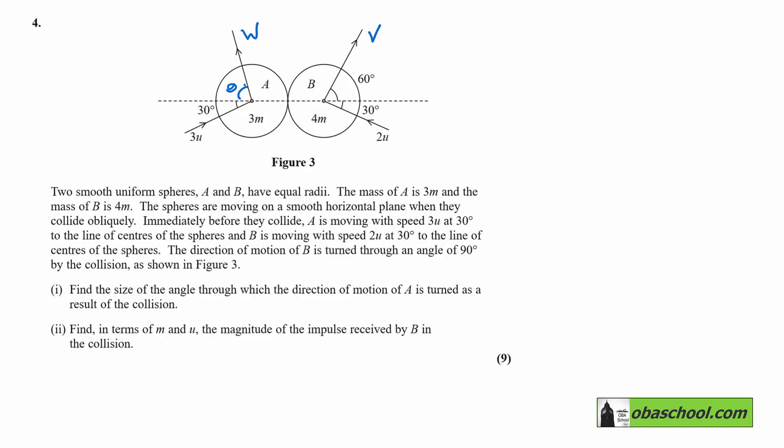Now remember, if they collide as shown in the diagram, any impulse will only be along the dotted line. And in Part 2, we've got to find in terms of M and U, the magnitude of the impulse received by B in the collision.